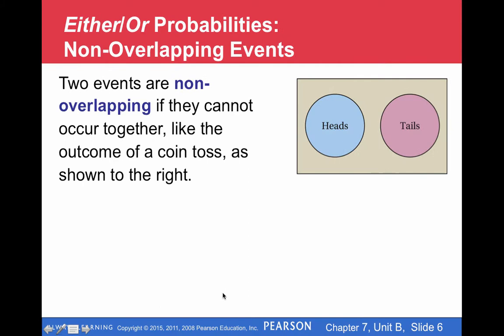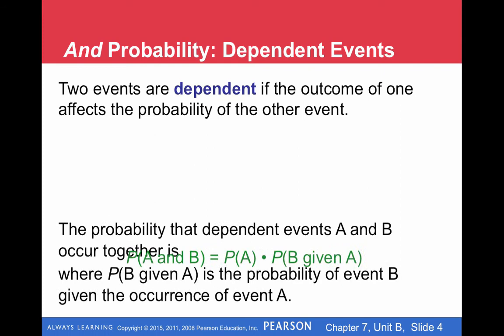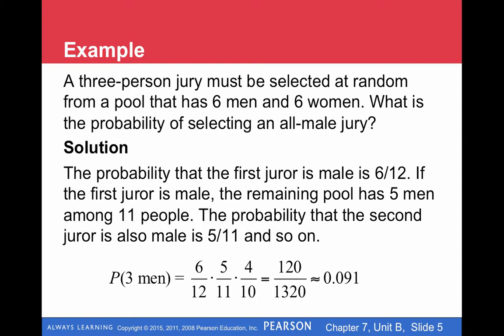That's a big difference between independent and dependent. The probabilities are the same in independent — they don't change based on the occurrence of some event — versus dependent where they do change. When we select people or we're sampling without replacement, we don't put any items back, and the probability changes as you go down the line.